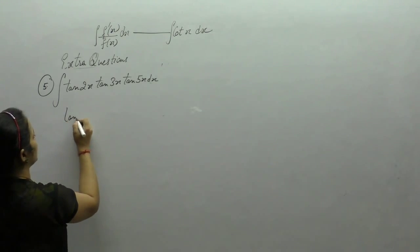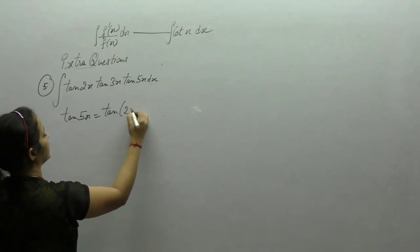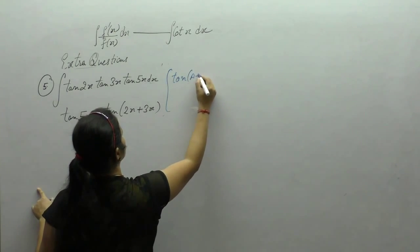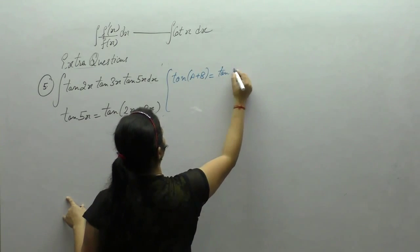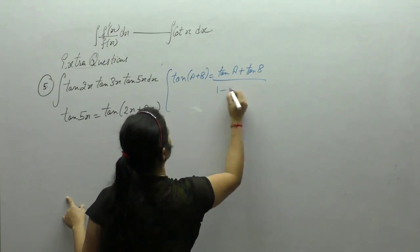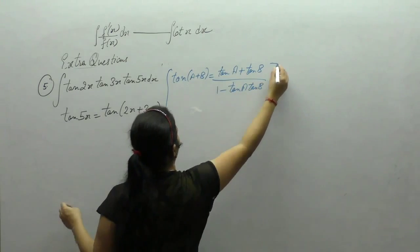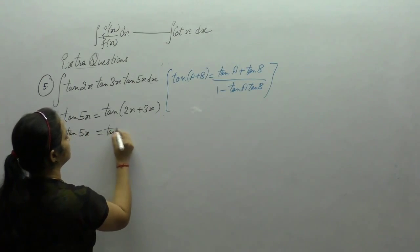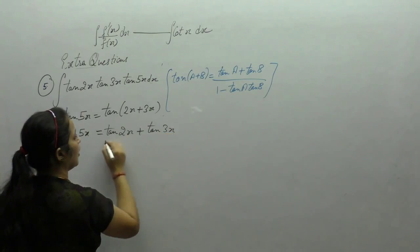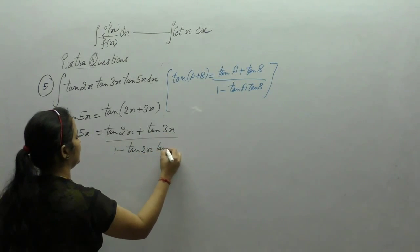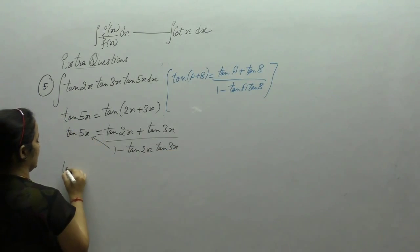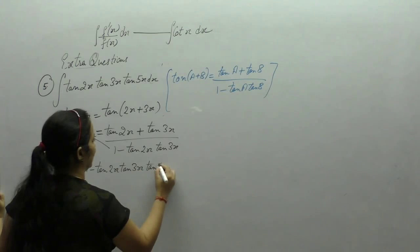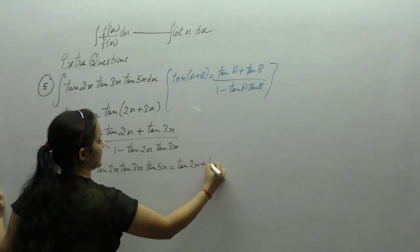We can write 5x as 2x plus 3x. Now we apply the formula for tan(a + b), which equals (tan a + tan b) upon (1 minus tan a · tan b). Applying this formula for tan(2x + 3x), and cross multiplying, we get: (1 minus tan 2x · tan 3x) · tan 5x equals tan 2x plus tan 3x. Therefore tan 5x equals tan 2x + tan 3x + tan 2x · tan 3x · tan 5x.